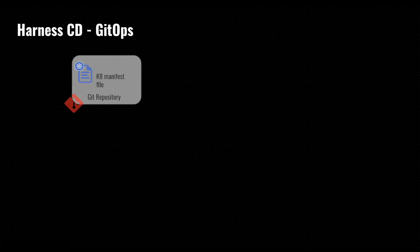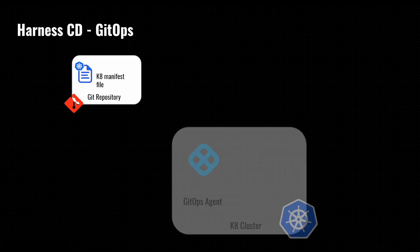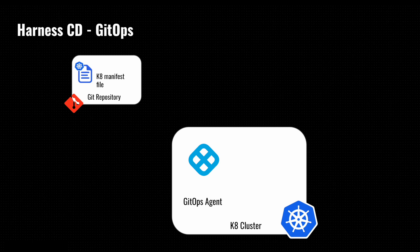Let's see how to set up GitOps with Harness CD GitOps. For this you will need a git repository with your Kubernetes manifests. Then we will install a GitOps agent inside a Kubernetes cluster. Whenever there is a change in your git repo, the GitOps agent will pull the change and apply those changes inside your Kubernetes clusters.